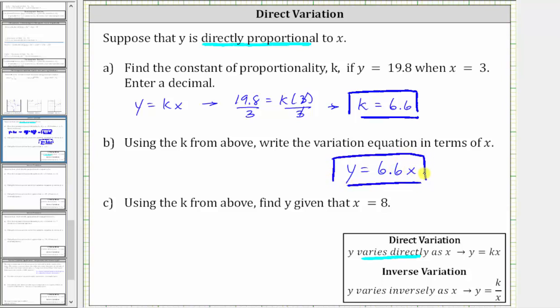And then finally for part C, using the k from above, or our direct variation equation, find y given that x equals 8. So to find y, we substitute 8 for x in our direct variation equation.